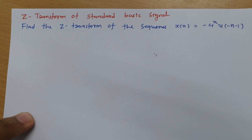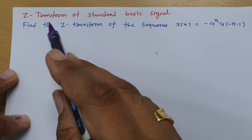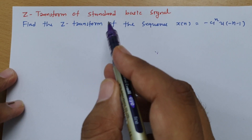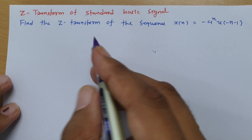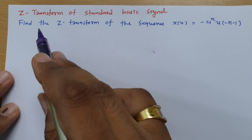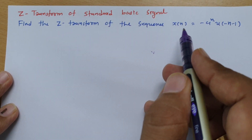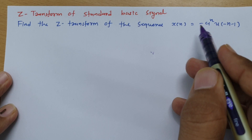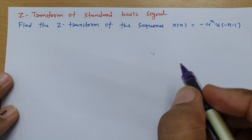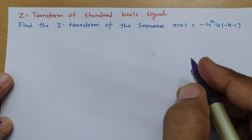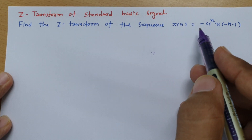Welcome to the signal and system lecture series. In this session, I will be explaining Z-transforms of some standard basic signals. We have a question: find the Z-transform of the sequence x(n) = -a^n · u(-n-1). We will calculate what is the Z-transform of this sequence.